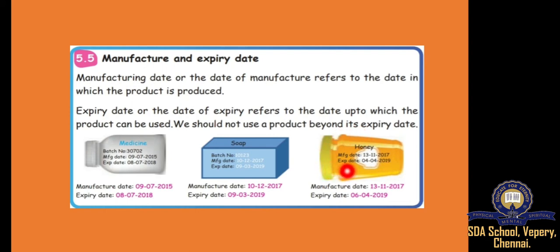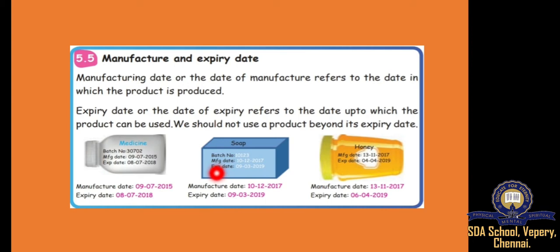What is the expiry date? Expiry date is 4-4-2019, that is 4th of April 2019. After this date, we should not use this honey. Even medicine also, soap also. Soap manufacture date is 10-12-2017, expiry date is 9-3-2019. So after March 9, 2019, we should not use this soap. Always whenever you buy any products in the market, we have to see the manufacture date as well as expiry date.